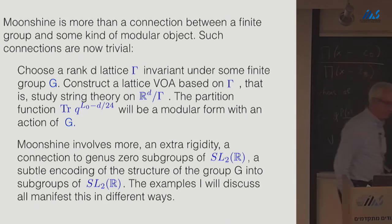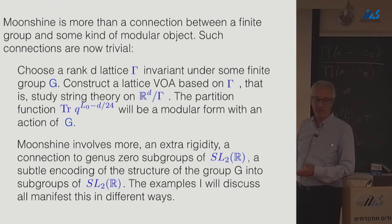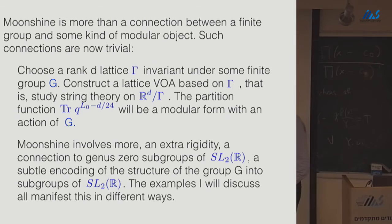So, I first want to say one thing about what moonshine is not. Because I think sometimes in the physics literature, there's an impression that it just means a connection between a finite group and a modular object. Some kind of modular form of some weight for some subgroup with a modular group. But it's really more than that because just finding such a connection, although it might have been strange in the past, is now completely trivial.